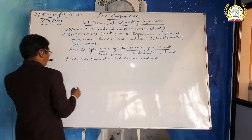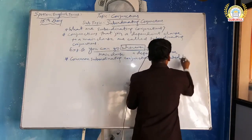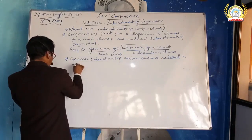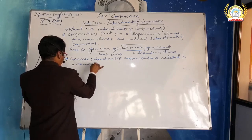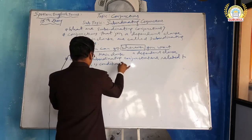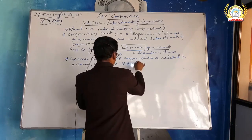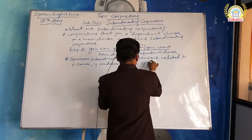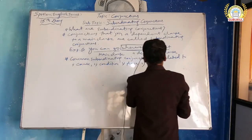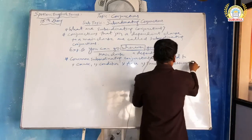Common subordinating conjunctions are related to five categories: number one, cause; number two, condition; number three, place; number four, time; and number five, concession or comparison.